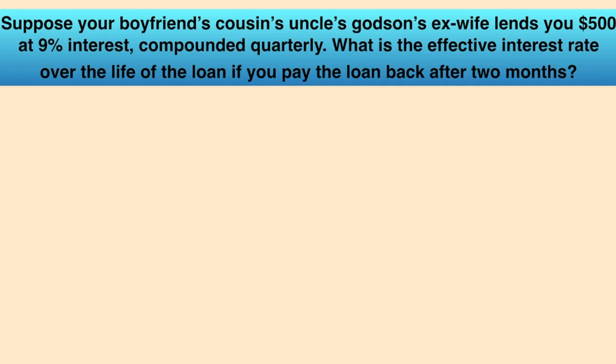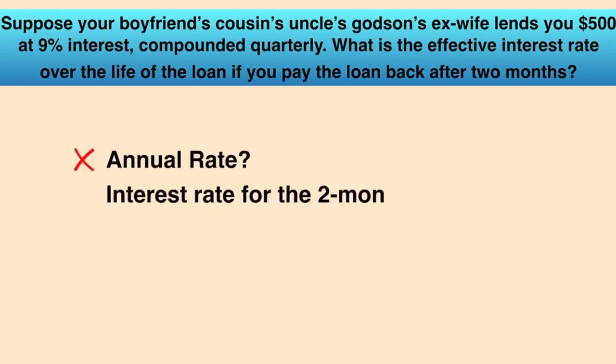Let's start with a simple example. Suppose your boyfriend's cousin's uncle's godson's ex-wife lends you $500 at 9% interest, compounded quarterly. What's the effective interest rate over the life of the loan if you pay the loan back after two months? Obviously, an annual rate wouldn't be very useful.